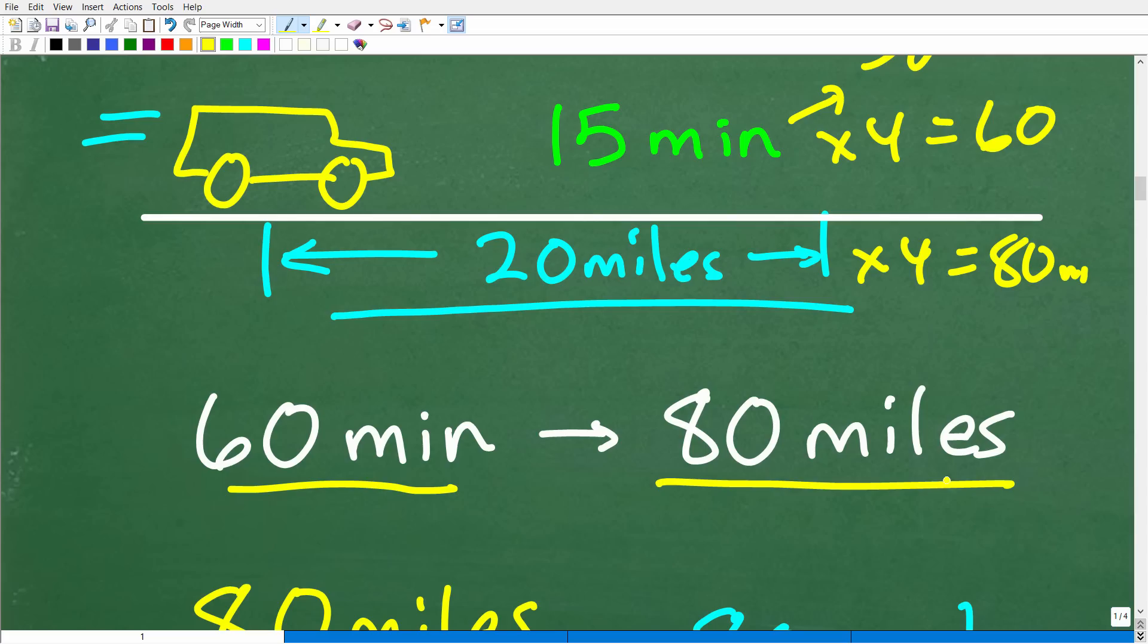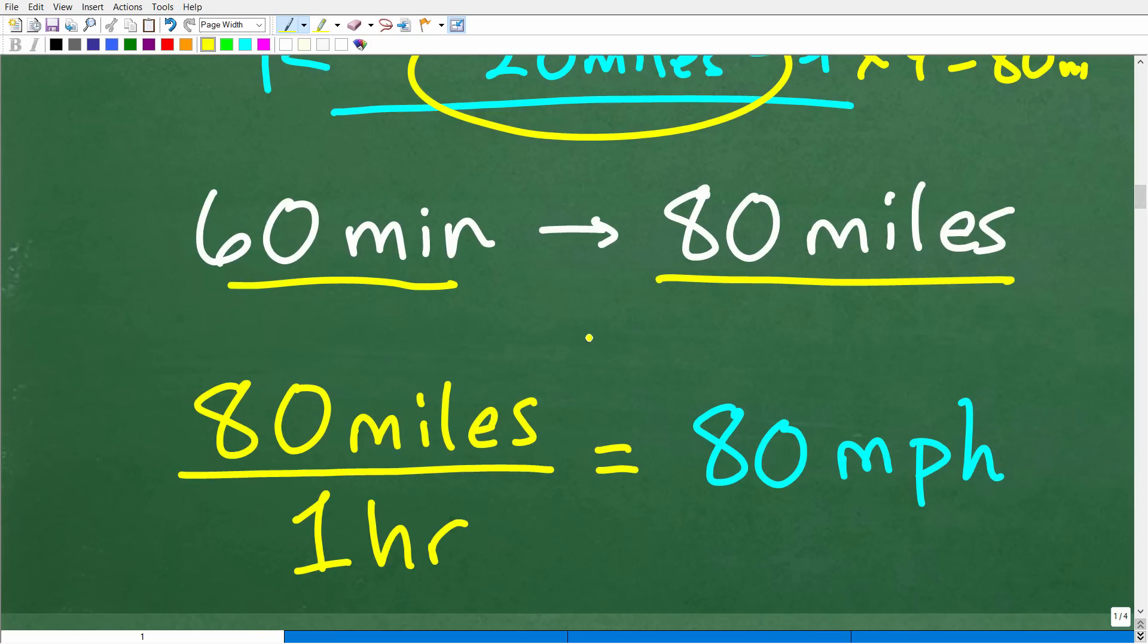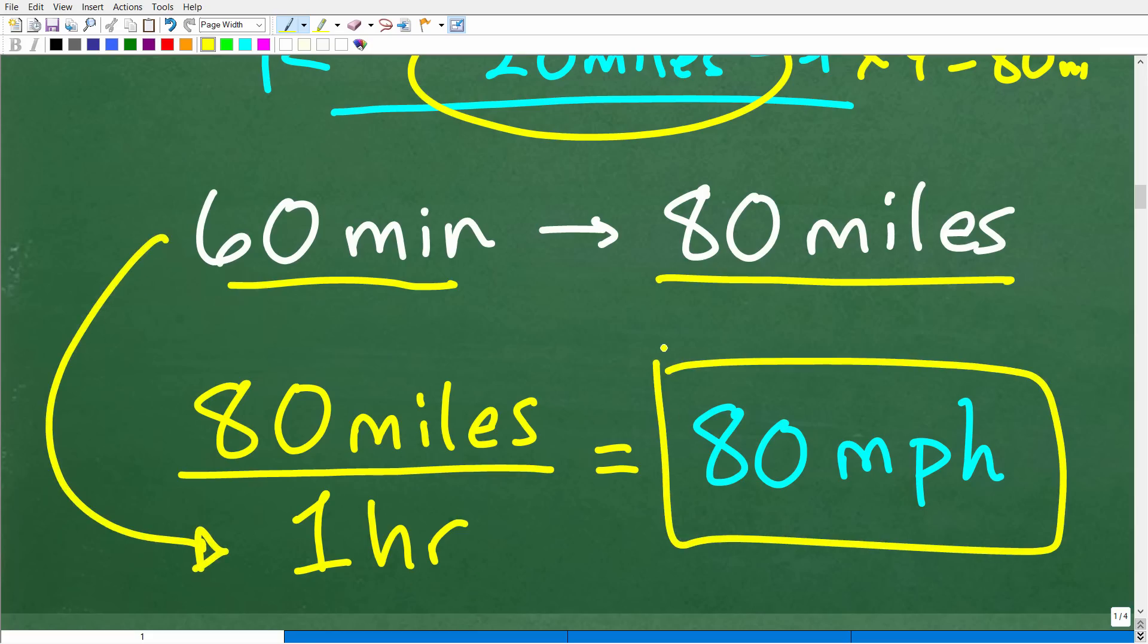So hopefully, most of you looked at the problem this way. In 60 minutes, the car will have traveled 80 miles. So if you cover 80 miles in 60 minutes, that is 80 miles per one hour because 60 minutes is one hour. So the vehicle is going 80 miles per hour.